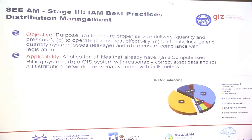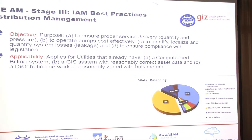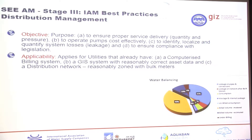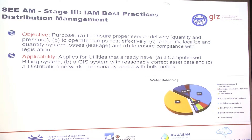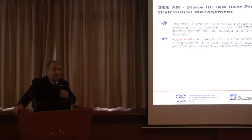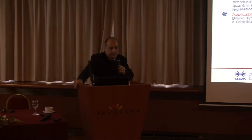What is distribution management? As you see in the slide, we want to ensure proper service delivery, to operate and control our costs, and to localize and quantify as much as we can system losses. There are preconditions: you need a computerized billing system, which everybody has; a good asset registry; and a distribution network reasonably zoned with valve meters. So we are going back to zoning now.